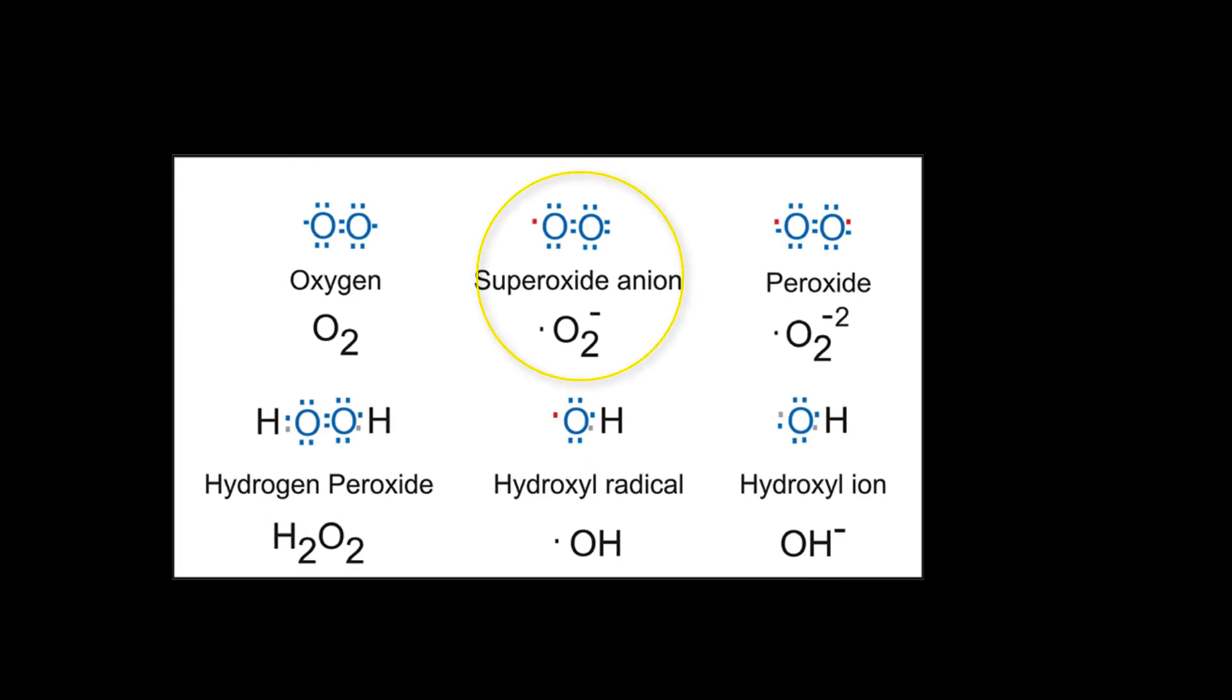Superoxides and molecules like it—for example, hydrogen peroxide and the hydroxyl radical—are known as reactive oxygen species or oxygen radicals. They may steal electrons from macromolecules like DNA, RNA, and proteins, and therefore destroy a cell.